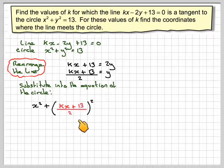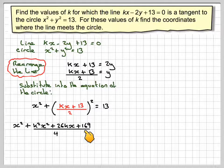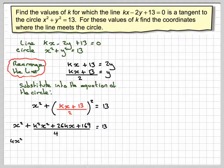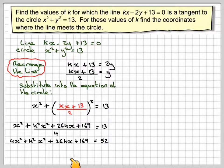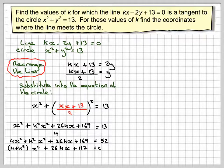We get x squared plus (kx plus 13 over 2) squared equals 13. Expanding the bracket gives k squared x squared plus 26kx plus 169, all over 4. Multiplying through by 4 gives 4x squared plus k squared x squared plus 26kx plus 169 equals 52. Collecting terms, we get a coefficient of (4 plus k squared) for x squared, b equals 26k, and the constant becomes 117, giving (4 plus k squared)x squared plus 26kx plus 117 equals 0. We'll call that equation 1.